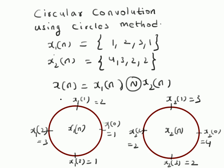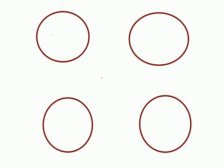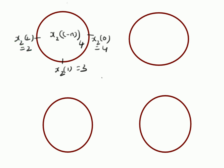The next step is to represent x2(-n mod 4) on a new circle. We reverse the direction of the number representation: x2(0) = 4 is placed here, then x2(1) = 3, x2(2) = 2, and x2(3) = 2. The numbers are now in clockwise direction because of this time reversal and mod 4 operation.